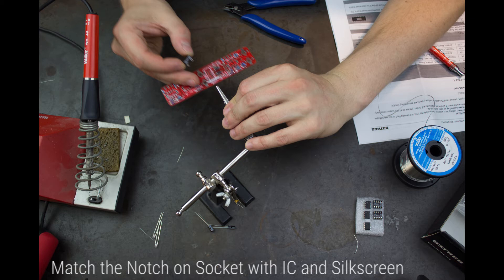On the silkscreen there will be an image of the IC holder with its own notch. Similarly, each IC will have either its own notch or a small dot on its top surface to identify the correct orientation.